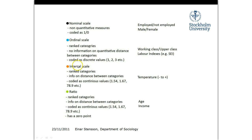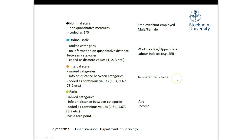Then comes interval scales. We have ranked categories, as in the ordinal scale, but this time we know the distance between the categories, so we can code them using decimal points. One classic example is temperature. You can't say that 80 degrees is double minus 40 degrees, because it's placed on a minus scale. We know the distance between each temperature, but we don't know the absolute point of zero — even though there is an absolute zero for temperature, it's expressed in minus.